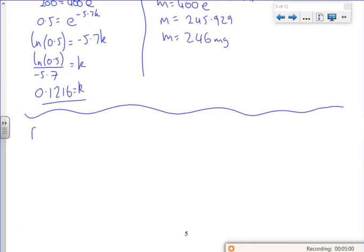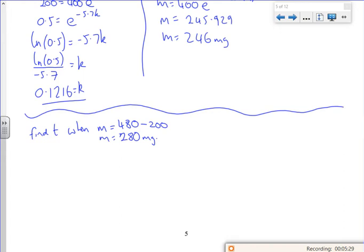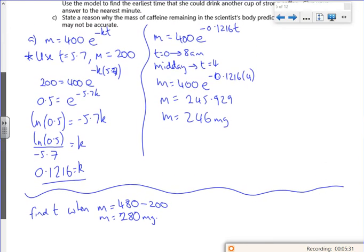So I want to find the time when the mass was 480, which is my limit, but I want to take off the 200. And people did not like that on the exam paper at all. Trying to suss out the fact that if I have a cup of coffee and the amount of caffeine in my body isn't less than 280, it's going to take me over. So most people just did 480, because most people don't have a clue what's going on in this question.